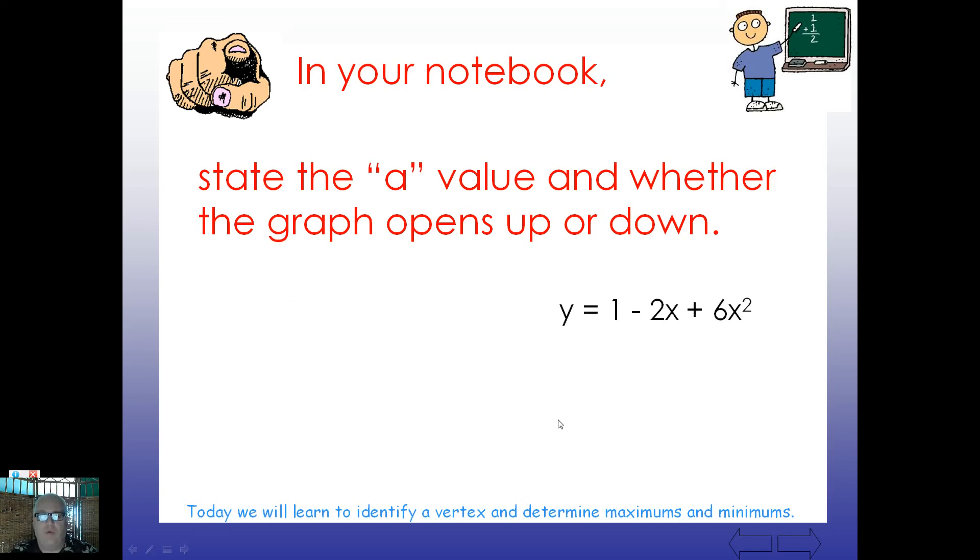How about this one? Y equals 1 minus 2x plus 6x squared. Well, the a value, remember, is the coefficient of x squared. So our a value should be positive 6, and it's going to open upward, positive 6. Even though it's written backwards, remember, it's always the a term, the number in front of x squared.